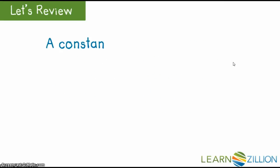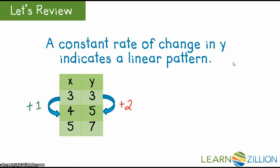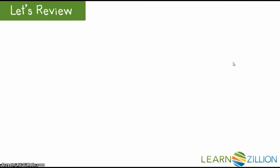Recall that when the pattern reveals a constant change in y compared to one unit change in x, the data can be modeled with a linear equation. Here we see that each unit change of 1 in x leads to two units in y, giving us a slope of 2.